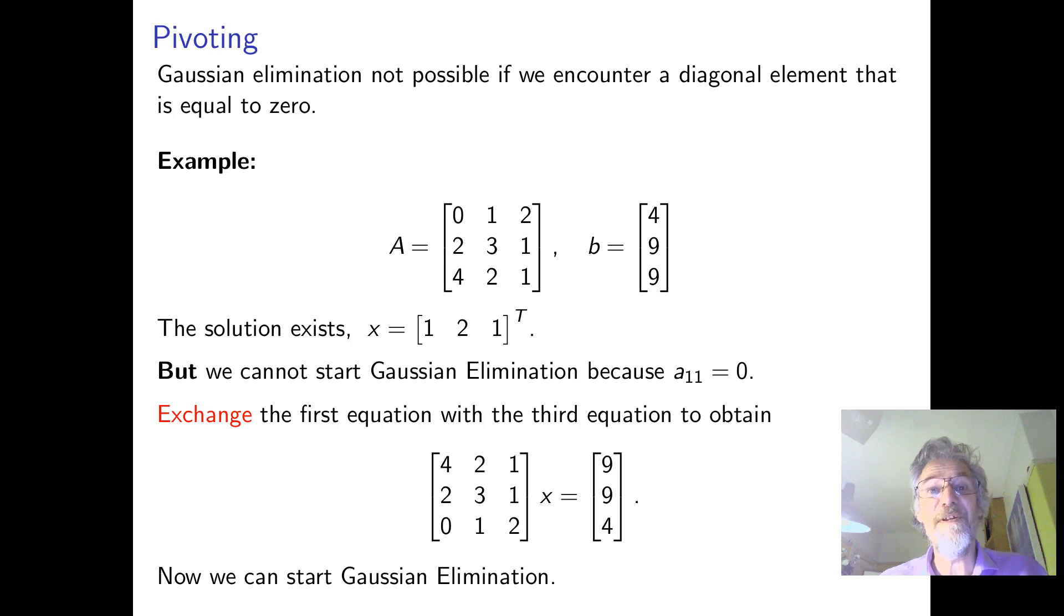Okay, so we're going to talk about pivoting. First, a very simple problem that we've encountered. You have a matrix A and a right-hand side B, and we're going to solve it. In fact, a solution does exist. So the matrix is non-singular and we're planning to use Gaussian elimination, but we're stuck because a11 is zero.